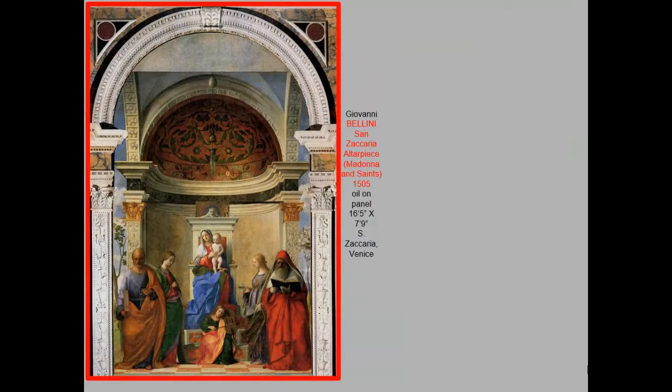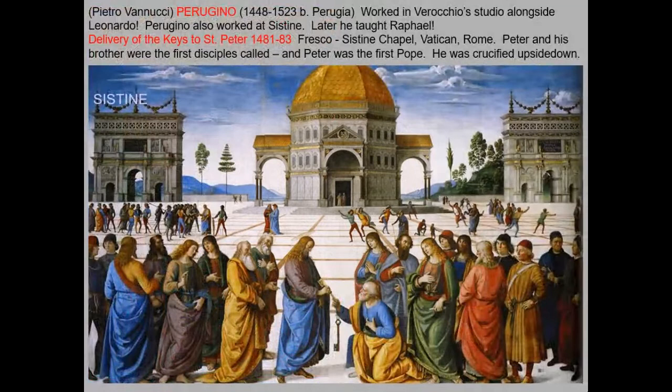Venetian painters are sometimes a little darker in terms of light and shadow and their colors can be richer. Venice was known for producing fine glasswork, and some Venetian paintings even have ground glass mixed into the paints to make them more luminous. One of the great leaders of the Venetian school is Bellini, whose San Zaccaria Altarpiece is of course a sacred conversation as well.